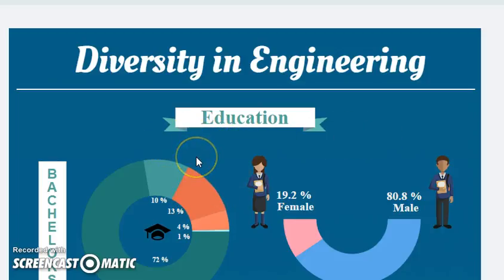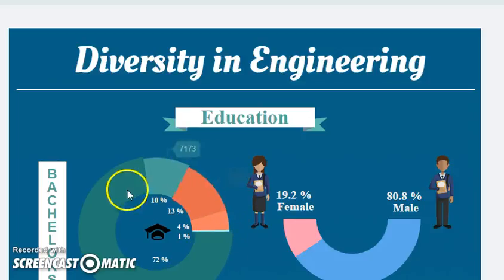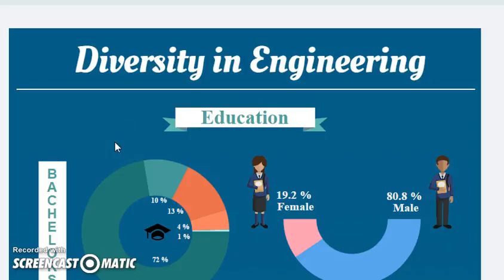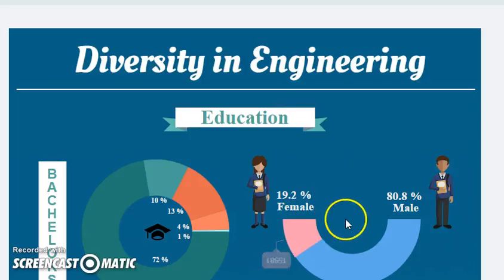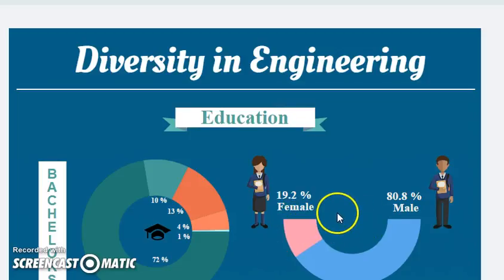I also used different shades of the two colors to display the different data variables, white to display categories, and pink to display the different data set between the genders.